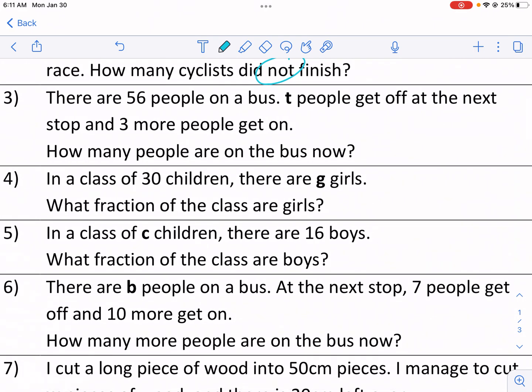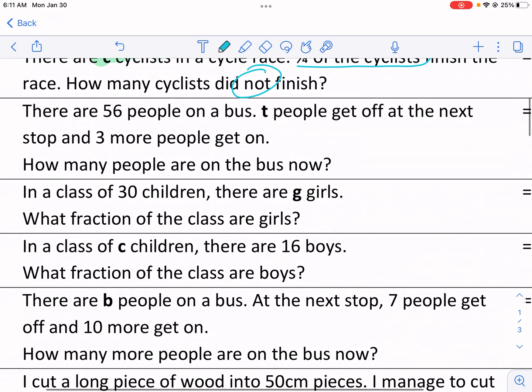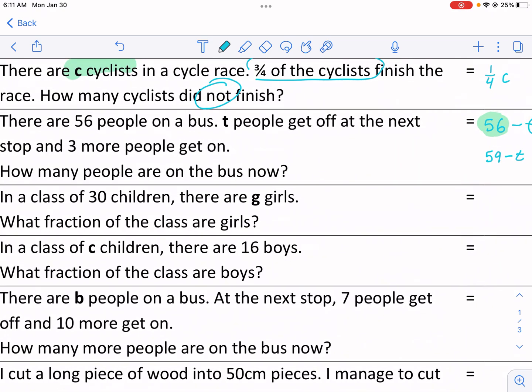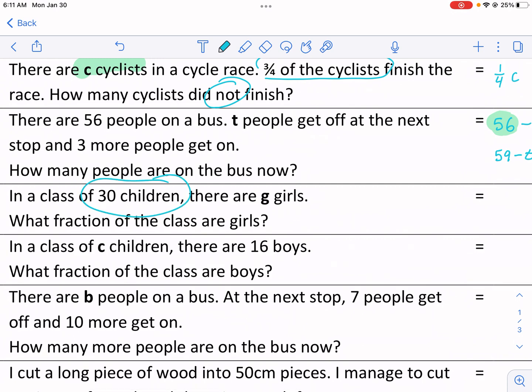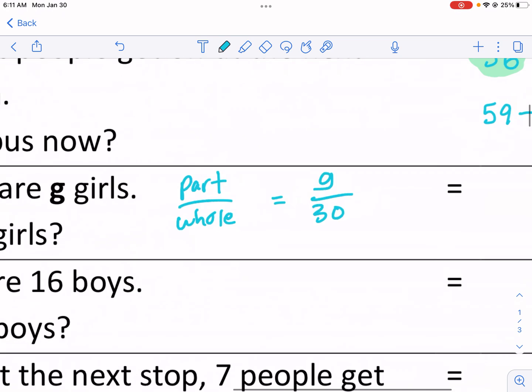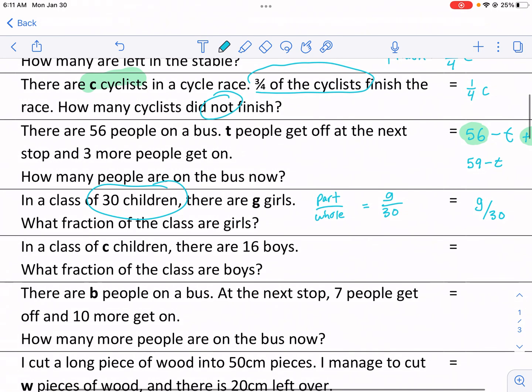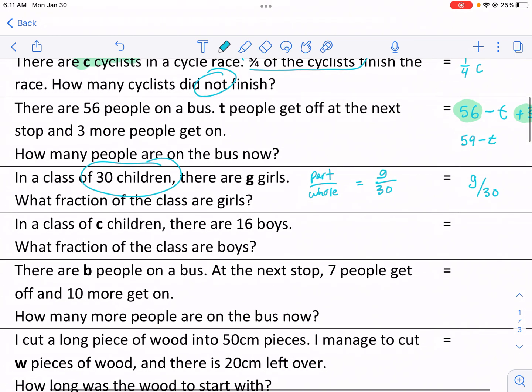In a class of 30 children, there are G girls. What fraction of the class are girls? So there are G girls. What fraction of the class are girls? So what we're going to do here is there's the total here. When we're talking about what portion or what percentage, it's part over the whole. So we know the total is the whole, the total number of children. And then G are girls. So there we go. It's G over 30. That's the fraction that are girls. So G over 30. We could also multiply that by 100 to get a percentage.